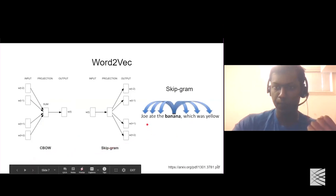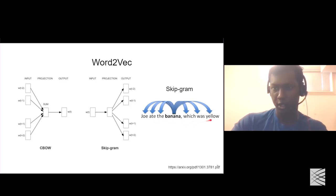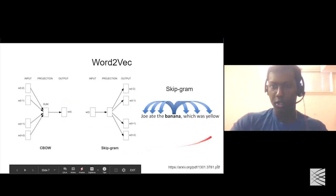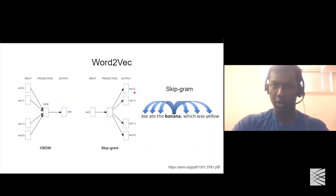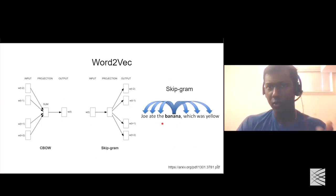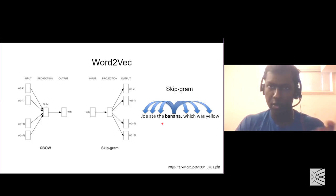In the case of skip-gram, it takes in the word 'banana' and gives you a probability distribution of the possible words that 'banana' can occur with — probability values for almost all the words in the corpus that banana is present in. This is one of the powerful models, published in 2013, and very prevalent in any kind of NLP task.